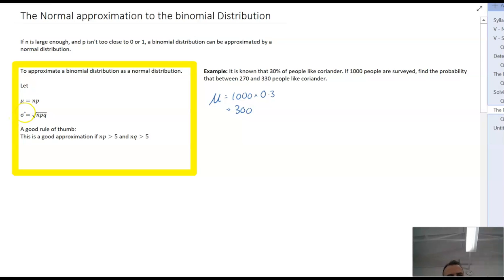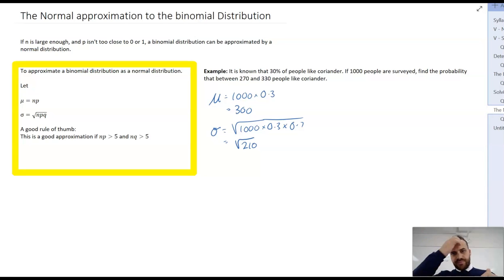Now, my standard deviation is going to be equal to the square root of npq. So that's 1,000 times success, 0.3, times q, which is 0.7. I can type that into a calculator somewhere. And that's the square root of 210. And I'll just leave it like that. I don't need to... If I put it into a decimal, that's going to make it worse. So I'm going to keep it there.